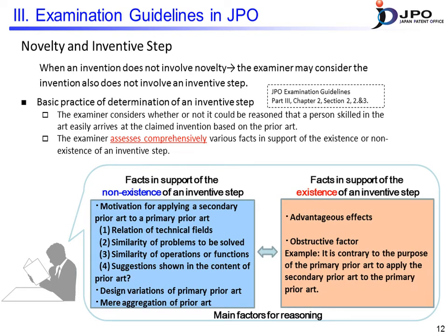On the other hand, if it is possible to give reason for denying inventive step, the examiner examines the factors for affirming inventive step in the next procedure. One of the factors for affirming inventive step is that the claimed invention has advantageous effects — in other words, unexpected results. Another ground for affirming inventive step is that there is an obstructive factor when combining prior art, in other words, teaching away.